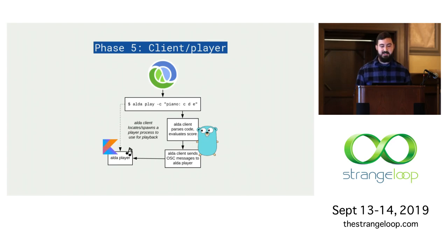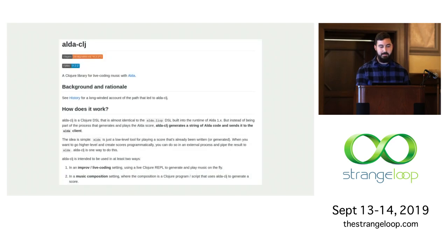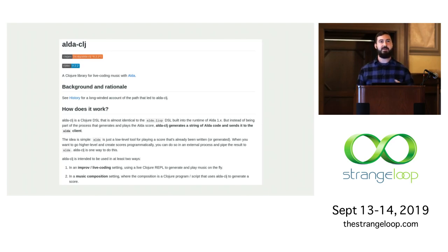This is where Clojure fits into the picture now. It's very important to me that I be able to continue to write algorithmic music in Clojure, and I actually found this is a better place in the diagram for Clojure to fit — because now I have complete control of a Clojure process that drives ALDA and does exactly what I want. I was able to get this working by writing a library for Clojure called ALDA-CLJ. It's a Clojure library for live coding music with ALDA. What it does is pretty simple: you have the same musical DSL — functions like note and chord — and under the hood ALDA-CLJ generates a string of valid ALDA syntax that gets sent to the ALDA command line client.